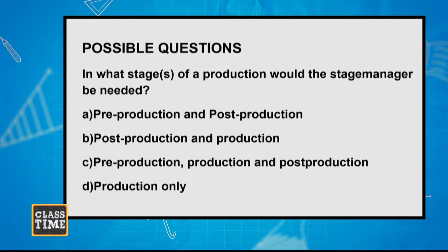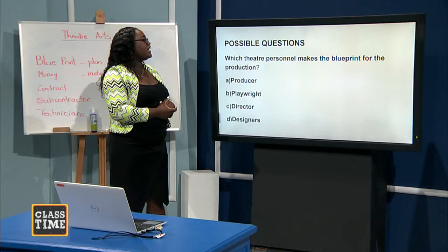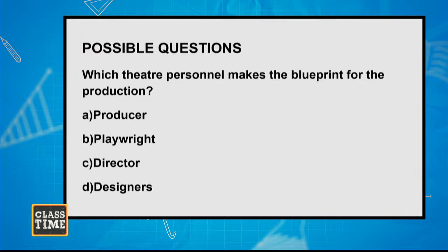Another question: Which theater personnel makes the blueprint for the production? A — the producer; B — the playwright; C — the director; D — the designer. The answer is B — the playwright. The playwright is responsible for the blueprint.